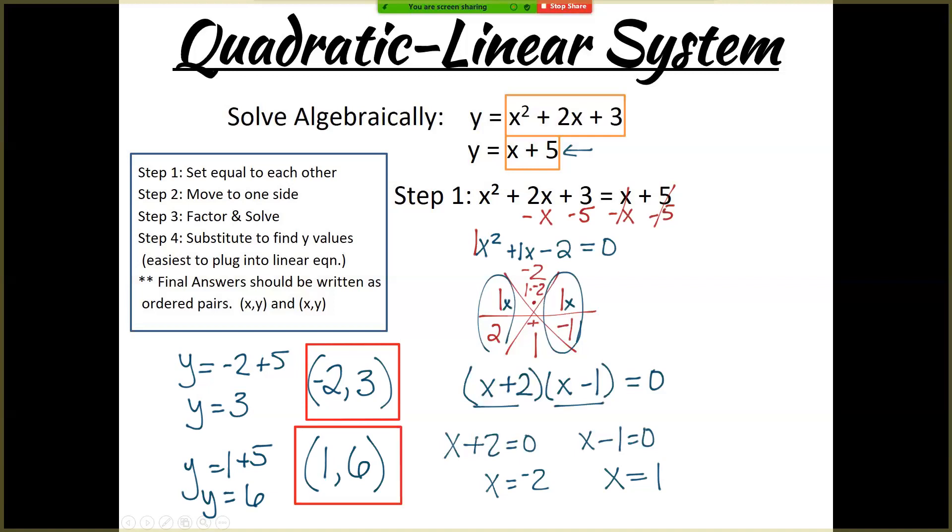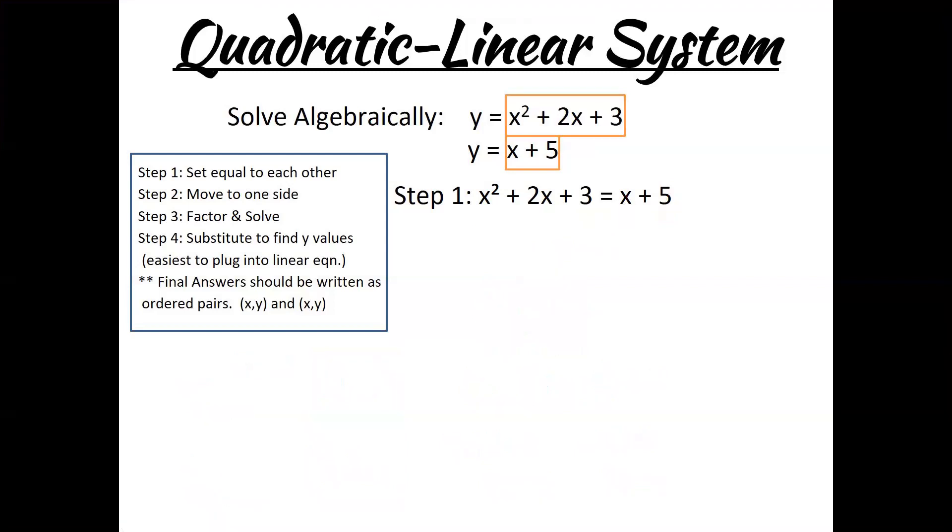So remember, your answer should always be an ordered pair. You should have 1 or 2 of them. In this case, we have 2. It's the most common to have. Just make sure there's one question like this on your next test. You've got to take that x value, plug it back in to find the y value, and then do the other x value as well. We could have just as easily taken these two values and plugged them into the top box. It just would have been more work. So the linear option is always your best option, because it's shorter. Let's go to the next one.